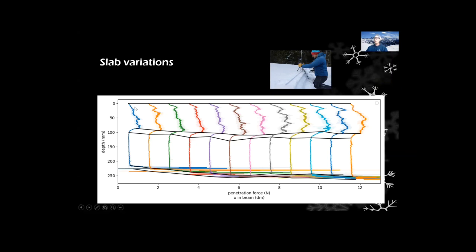Each one of those is represented by this trace here. These are penetration hardness traces, and this line here represents the bottom of the added slab layer.